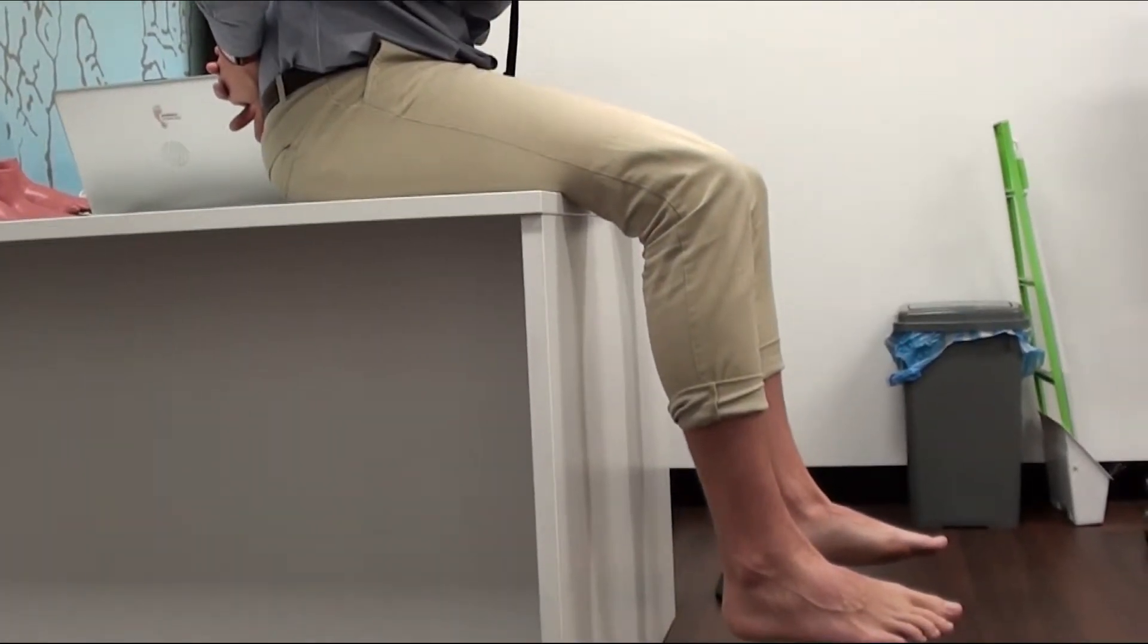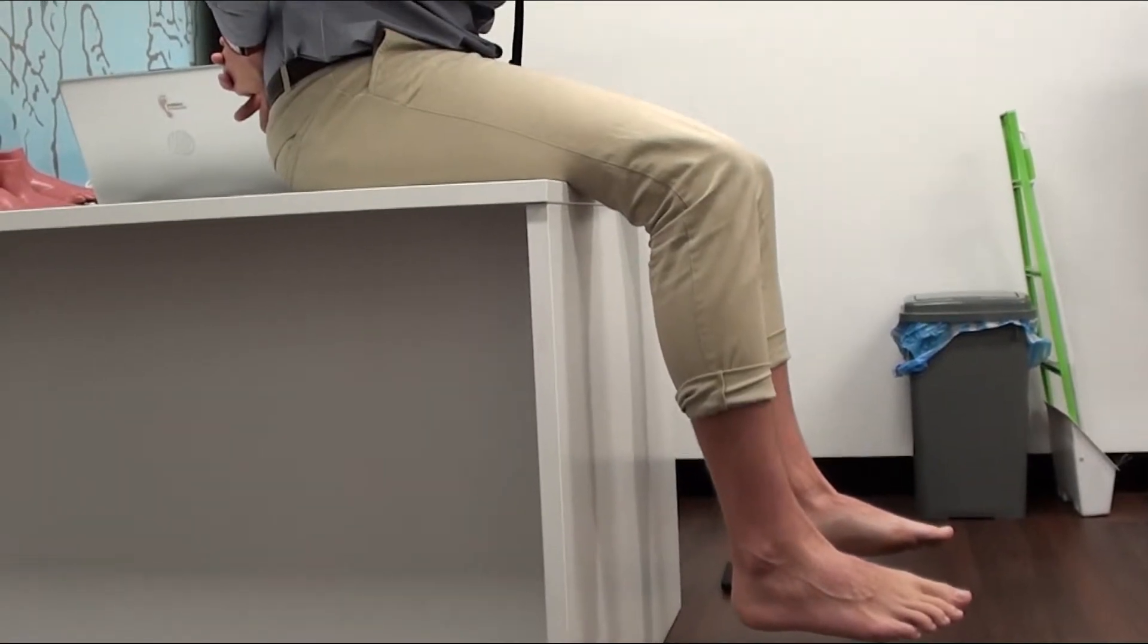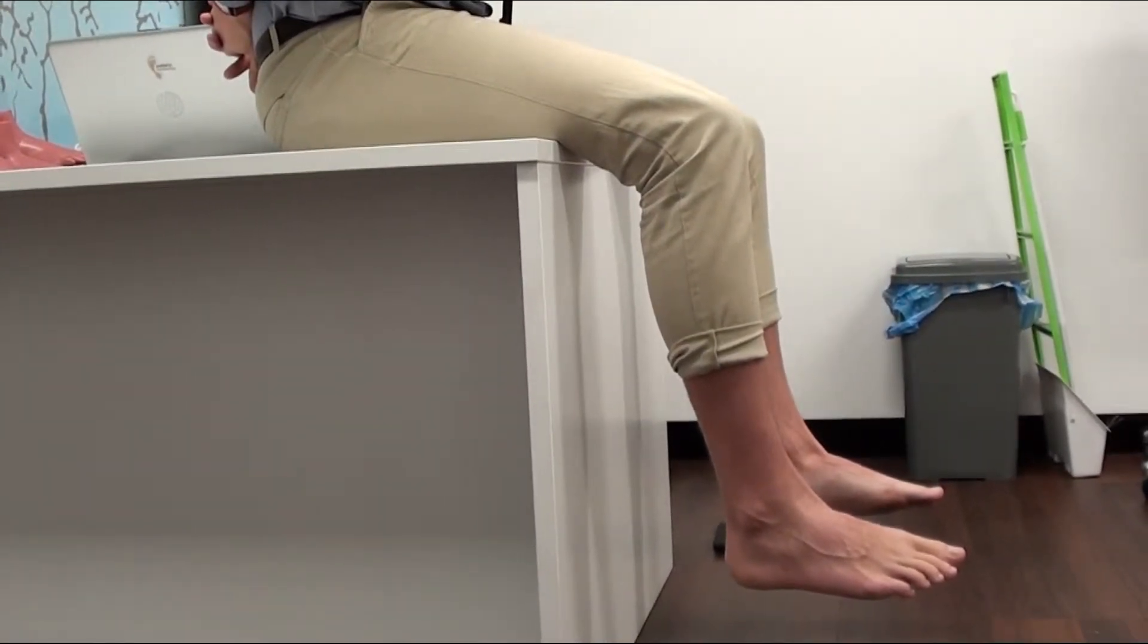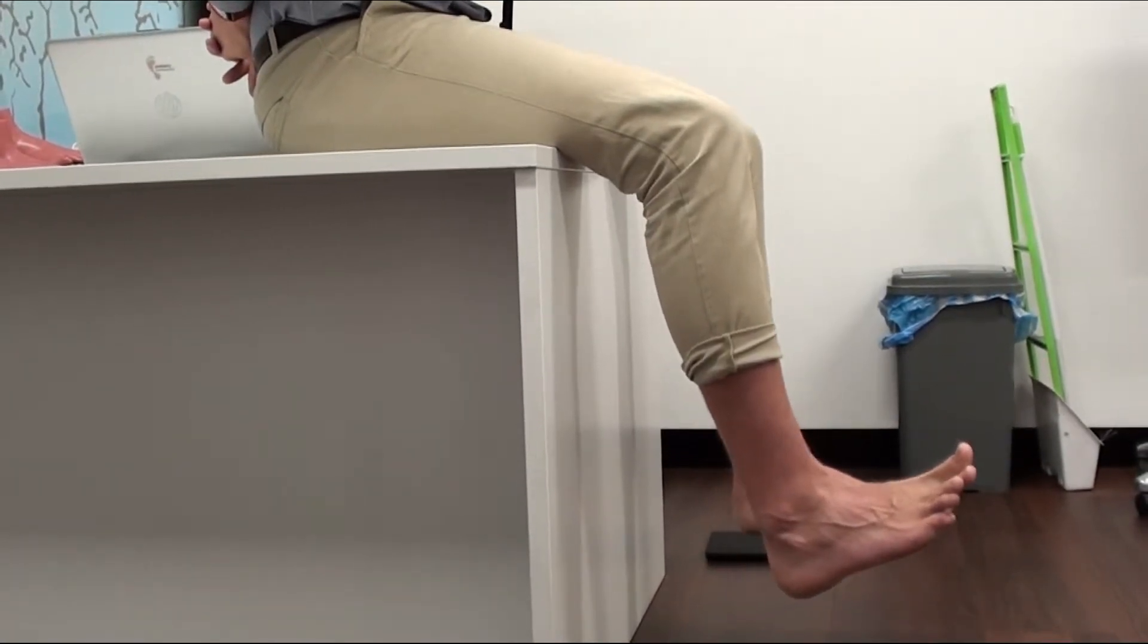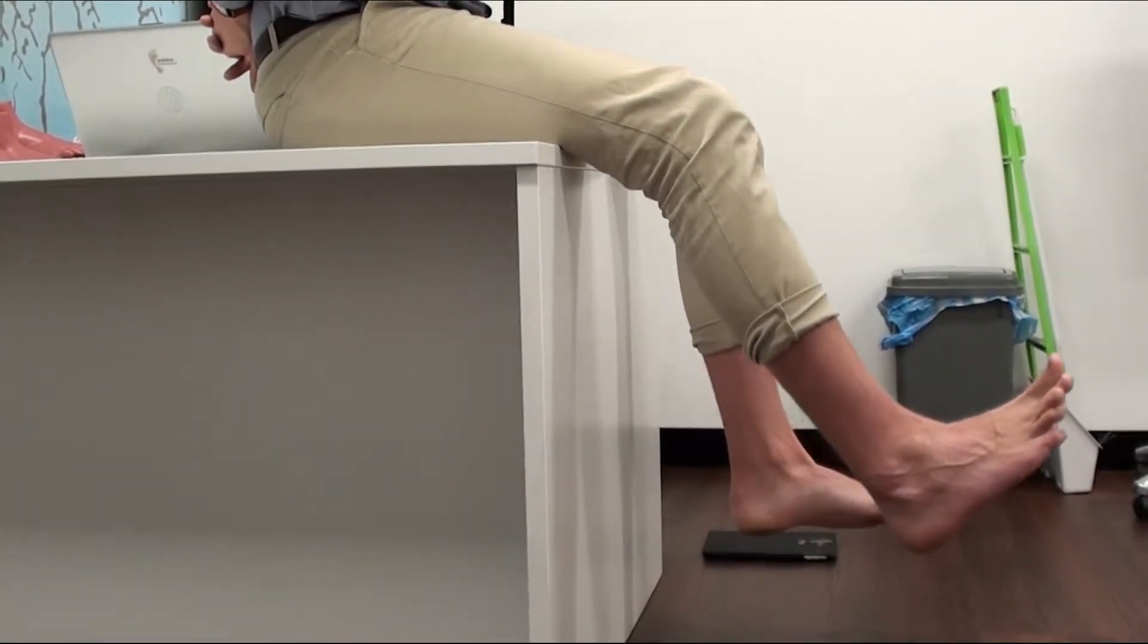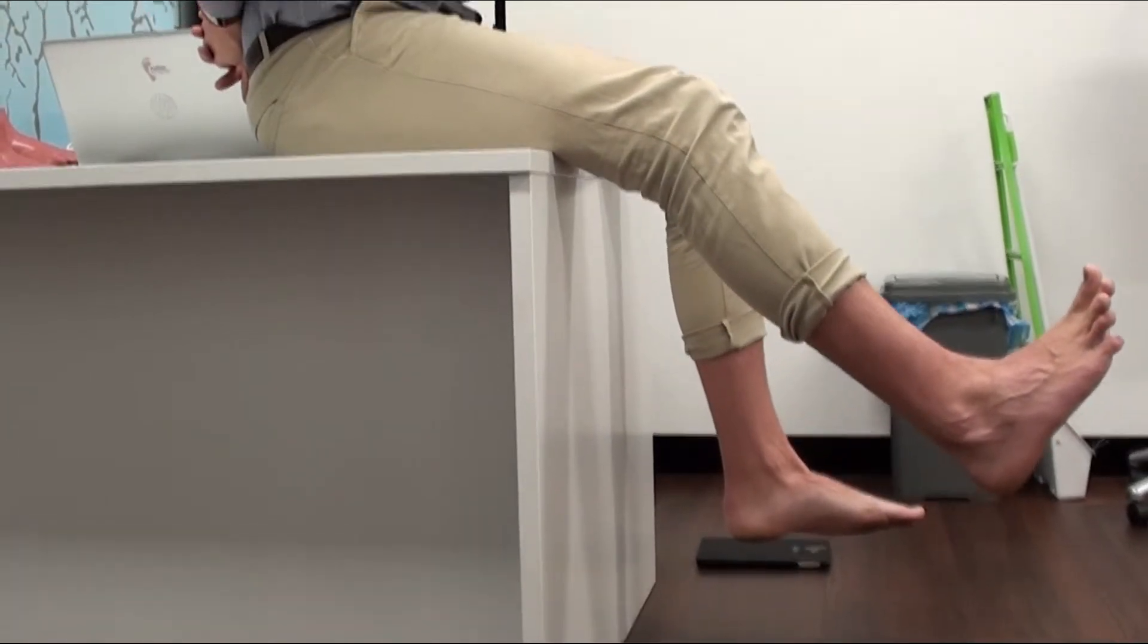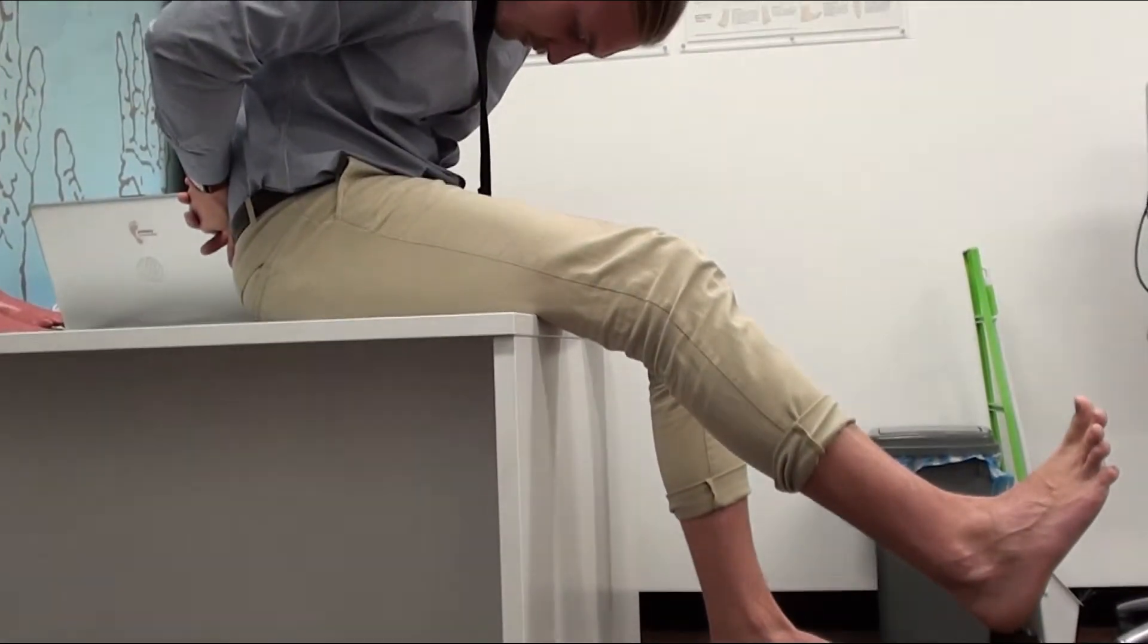We do one leg at a time, and for example with our right leg, we are going to pull our toes and ankle back towards our shin, and then extend our leg straight until we feel that stretch either behind the calf, the knee, or the hamstring.